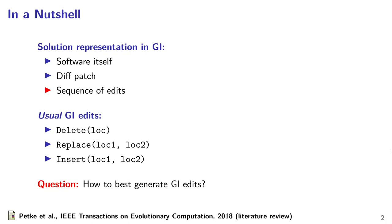Edits are easy to generate, easy to manipulate, and they provide a compact representation for program variants. To obtain the modified variant, one only needs to start from the original software and apply in order the different edits. The central question we ask is: how to best generate the GI edit?